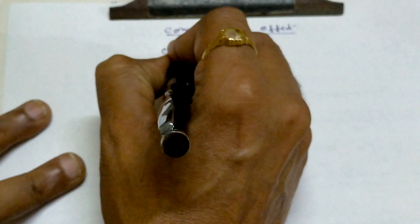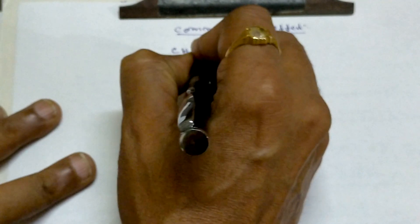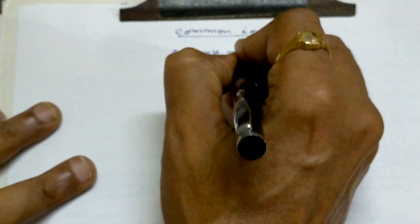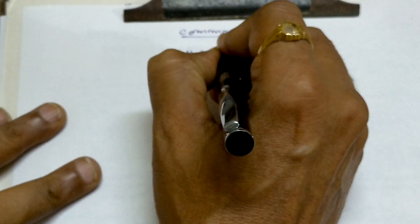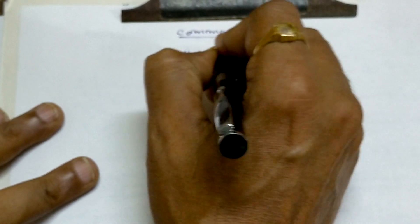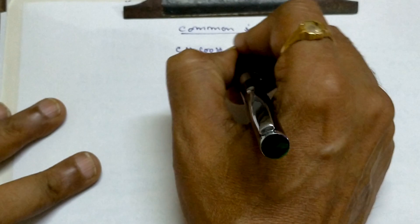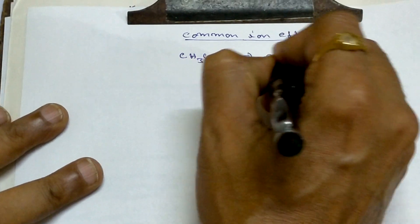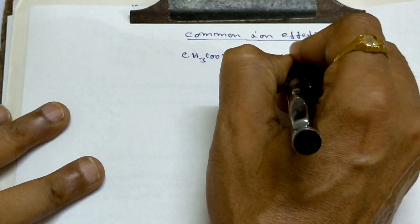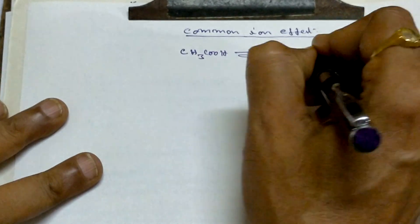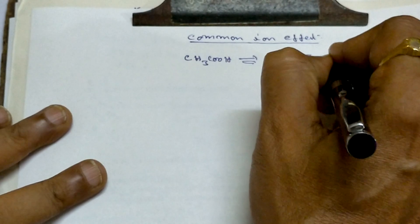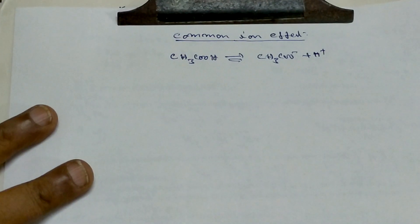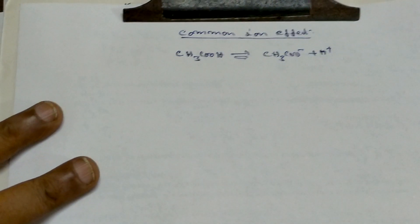Take acetic acid — a weak acid. Acetic acid is in equilibrium with water, producing CH3COO minus and H plus. That is the acetate ion and the proton ion in equilibrium.